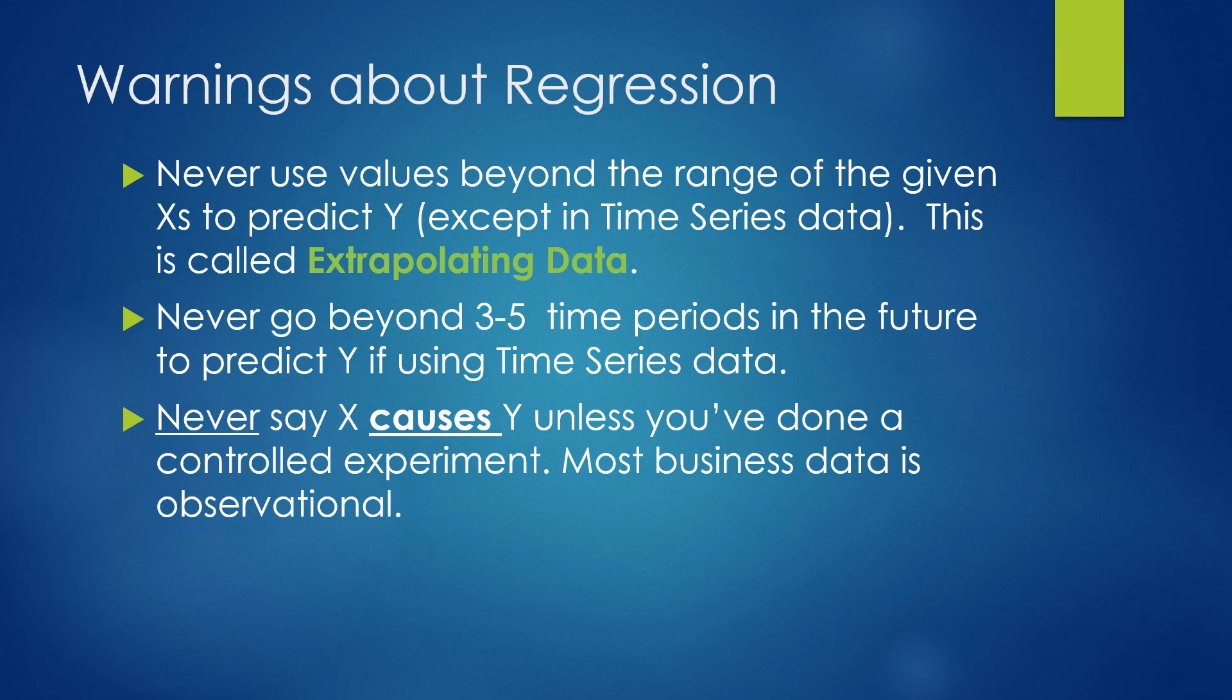Some warnings about using regression. We never want to use values beyond the range of the given x's to predict y. So if we were going to predict how much dog food to feed a dog based on his weight, we would only want to use values between, say, 4 pounds up to 100 pounds. Otherwise, if we start using great big dogs, it would be extrapolating data, which gives us large errors in prediction. We never want to go beyond 3 to 5 time periods if time is our x variable. That's extrapolating too far into the future. And then we never want to say x caused y unless we've done a controlled experiment. Most business data is observational and not experimental.